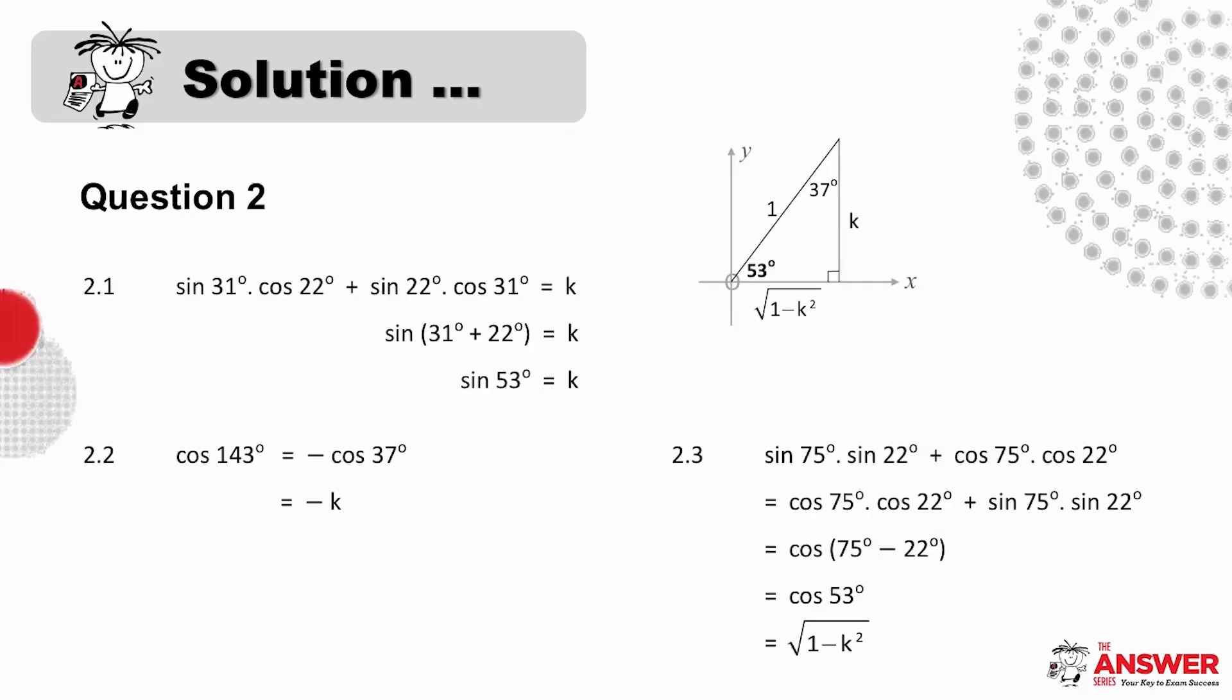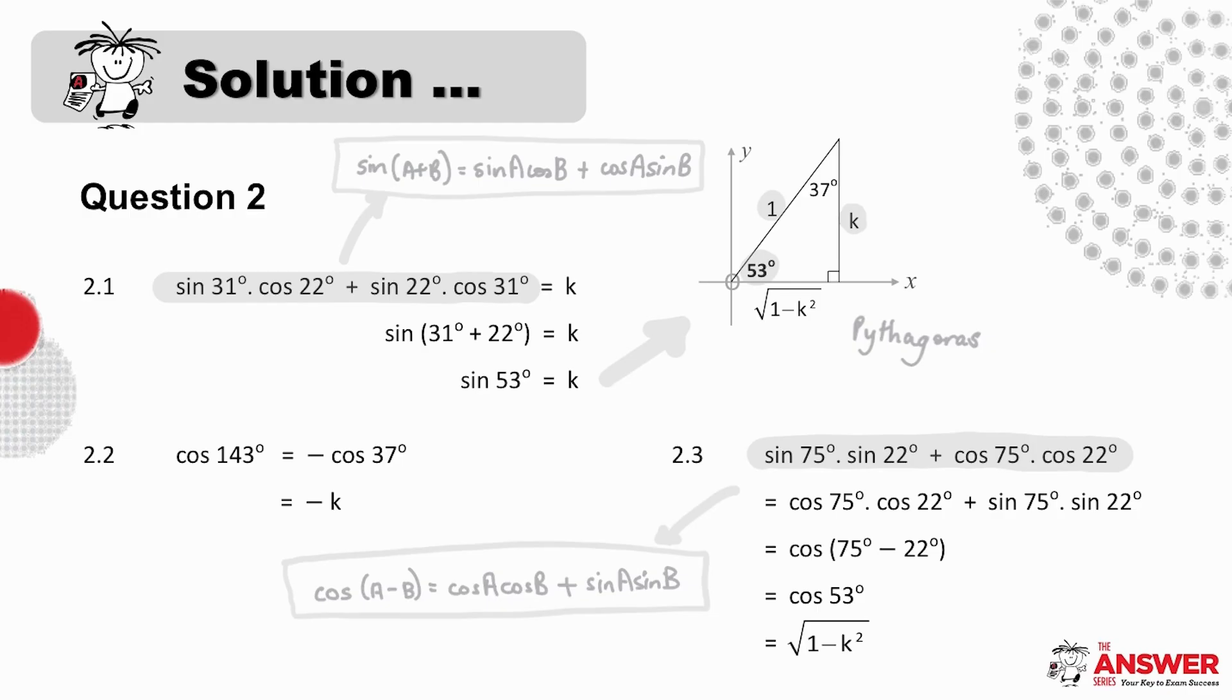Now for the second question. First we need to identify this expression as a sine compound angle of the sum of two angles. This then gives us that sine of 53 degrees equals k. We use this information to then make our sketch: 53 degrees and k over 1. The third side is root 1 minus k squared and the third angle is 37 degrees. Cos of 143 reduces to negative cos 37, and reading off the sketch we see that cos 37 is k over 1, and so negative cos 37 is negative k. And then lastly for 2.3, this is the expression for cos of the difference of two angles, which of course can be written with the term in cos first if this helps you to recognize it. And so this is therefore cos of 75 minus 22 which is cos of 53, and this we can read off the sketch as root 1 minus k squared.